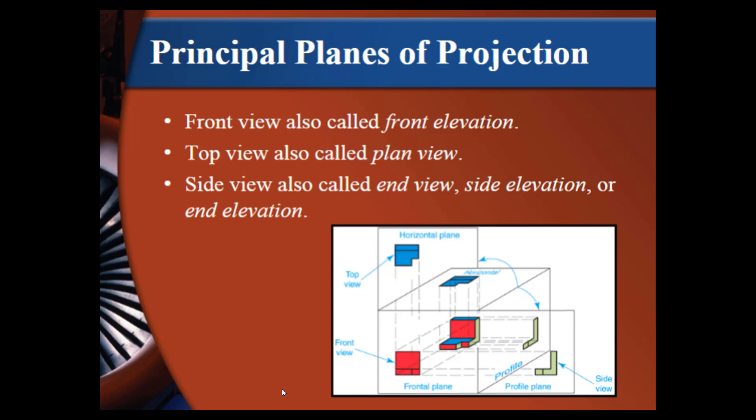Same with top view and plan view. Typically, in mechanical drafting, you call it a top view. In architectural drafting, we call it a plan view. The side view can also be called an end view, a side elevation, or an end elevation. Typically, in mechanical drafting, we use the term end view, and we typically say right view or left view. In architecture, we're going to say side elevation or end elevation.